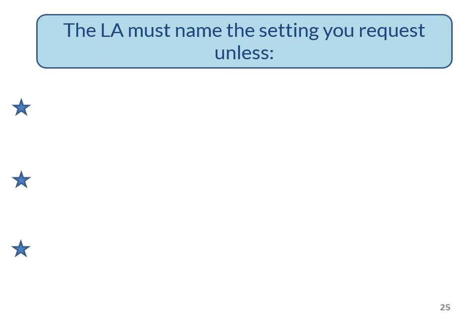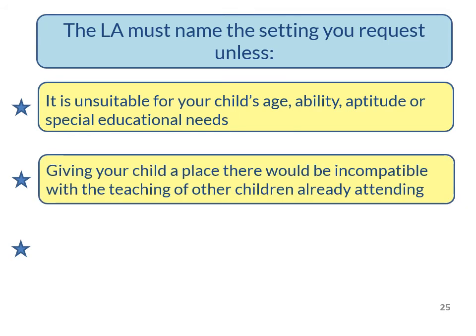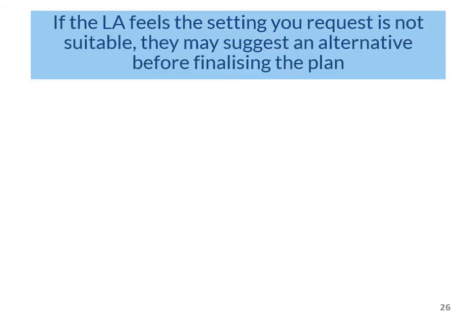When the LA consults with the educational setting you request, they will consider the setting's views very carefully. The LA must agree with the setting you request unless they feel the consultation shows that the setting is unsuitable for your child's age, ability, aptitude or special educational needs, or giving your child a place there would be incompatible with the teaching of the children already on their roll, or it would be incompatible with the use of resources for all their pupils. If the local authority feels that the setting you request wouldn't be suitable, they may suggest an alternative for you to consider before they finalise the plan.